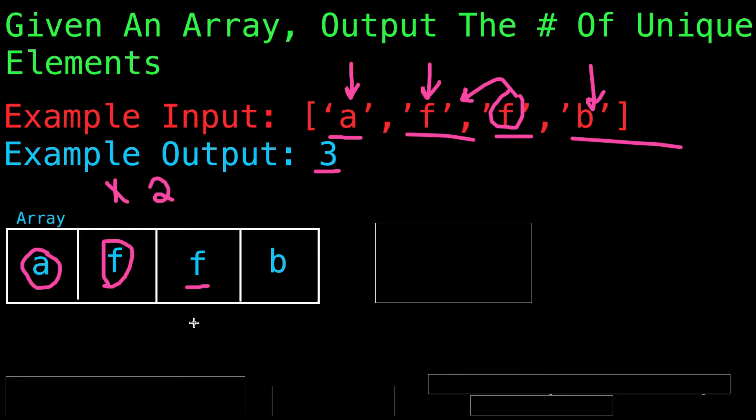We would check this F, and we would go through all the past elements to see if there exists another F. Since there does, we wouldn't increment our counter. Then we would check B, we would go through all the previous elements and check whether B exists or not already. Since it does not, we would increment our counter to 3 and output the final count.